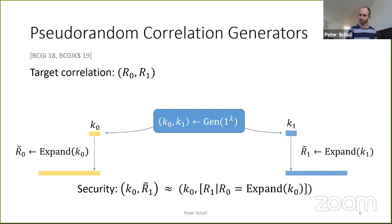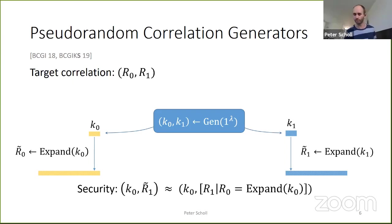This security notion is also very useful: if you have a PCG, then in almost any class of applications where you want to use correlated randomness in your MPC protocol, you can directly plug this in and replace the correlated randomness with pseudorandomness from the PCG, and still retain security.